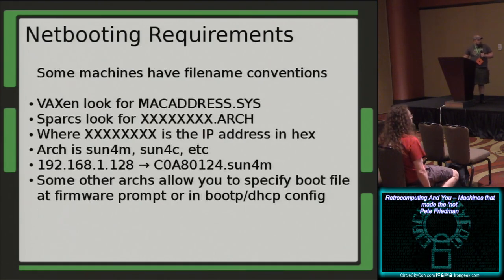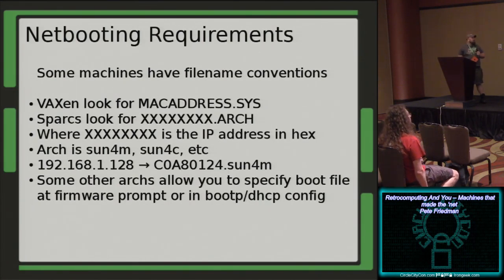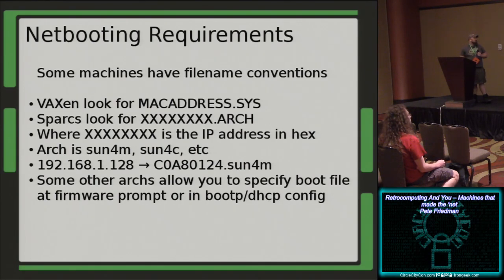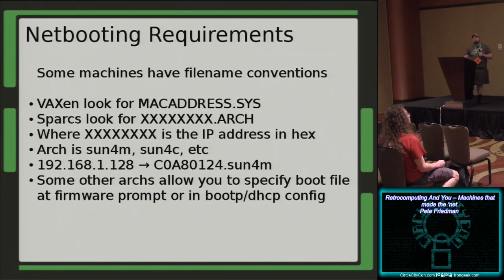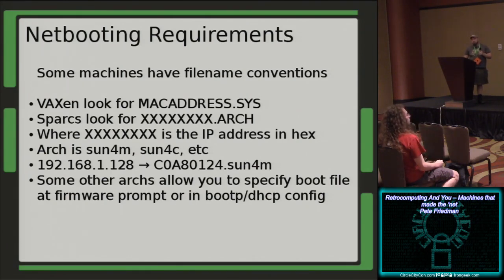There are some conventions to be aware of, and one reason I like using NetBSD for these systems is they have really good documentation for the specifics that some machines require. VAX with MOP will look for a file named the MAC address of the system dot sys - that's what it will boot from. Some machines, specifically the SPARC 32-bit machines, look for a file named the MAC address or IP address in hex dot whatever the architecture is - like sun4c or sun4m. Newer machines - the SPARC 64s and Alphas - you can actually specify the boot file in the PROM, which makes things much simpler, and is another reason I recommend starting newer and working back.